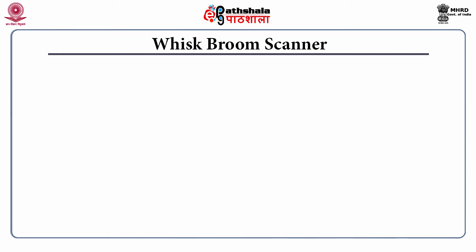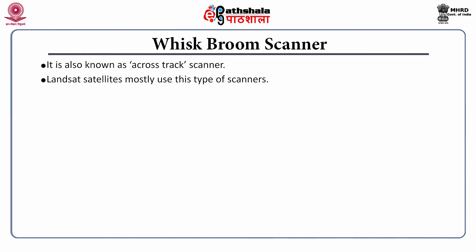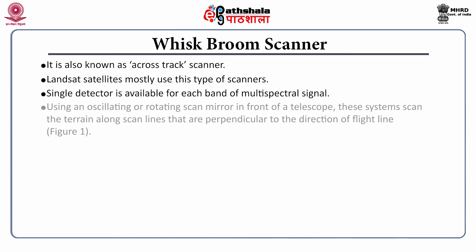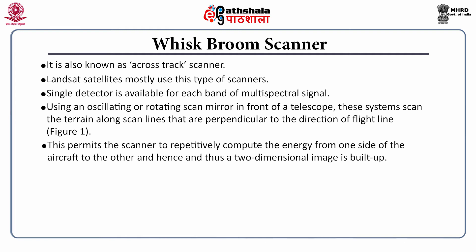The first type is the whisk broom scanner, also called a cross-track scanner. The best example is the Landsat satellite, which generally uses this type of scanner. In this scanner, a single detector is available for each band of multispectral signal using an oscillating or rotating scan mirror in front of a telescope. These systems scan the terrain along scan lines that are perpendicular to the direction of the flight line, as can be seen in figure 1. This scanner permits repetitive scanning of energy from one side of the aircraft to the other, building up a two-dimensional image.